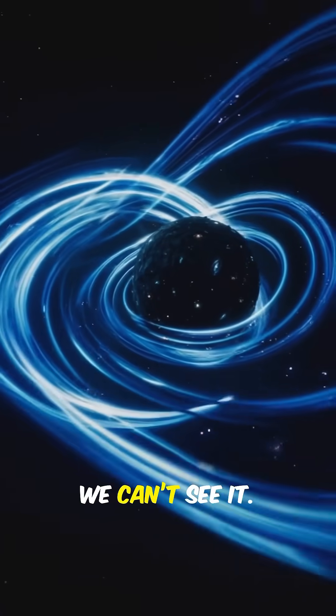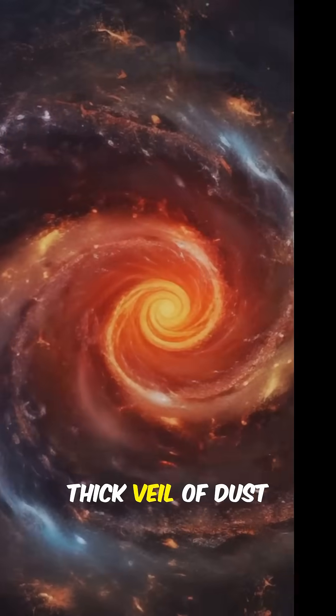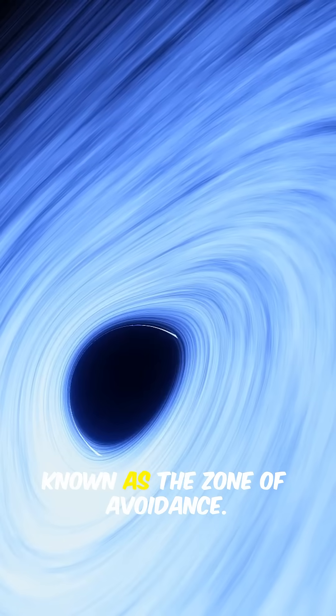But here's the rub, we can't see it. It's obscured by a thick veil of dust and gas in a lens known as the Zone of Avoidance.